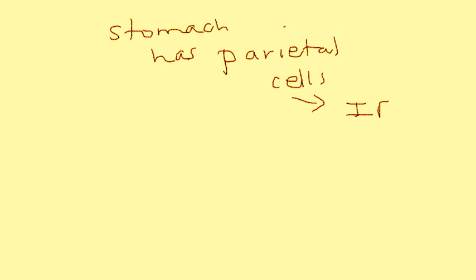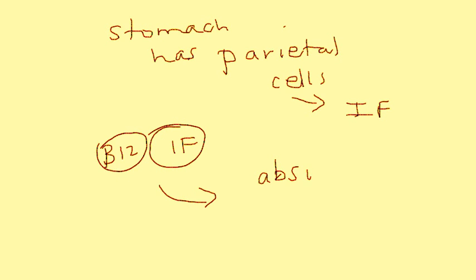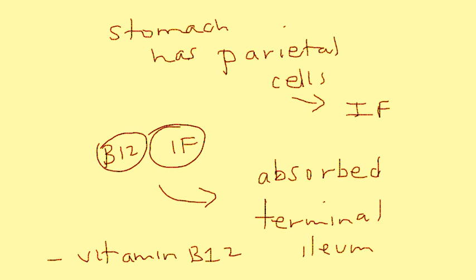I want to talk a little bit more about this intrinsic factor. Remember, the stomach has parietal cells. Those parietal cells secrete intrinsic factor, and then the intrinsic factor binds to the B12. Eventually this gets absorbed in the terminal ileum, the final part of the ileum. If this doesn't take place, then you get vitamin B12 deficiency. Now, there's a special name given to this particular type of vitamin B12 deficiency. If this is the cause of vitamin B12 deficiency, it's called pernicious anemia.